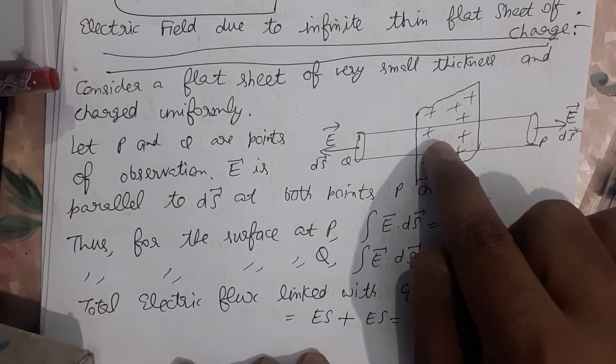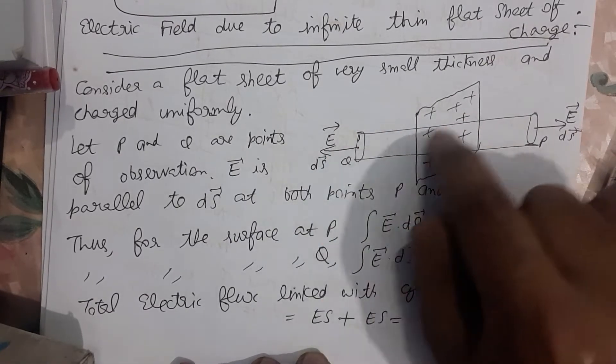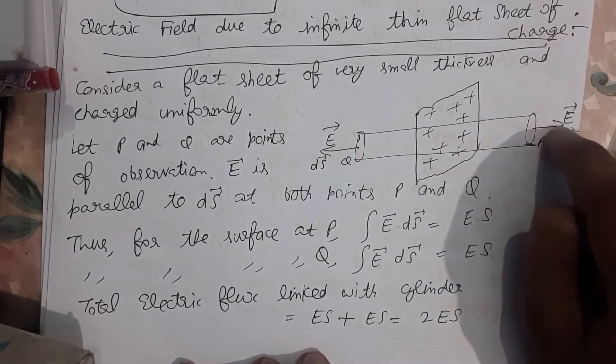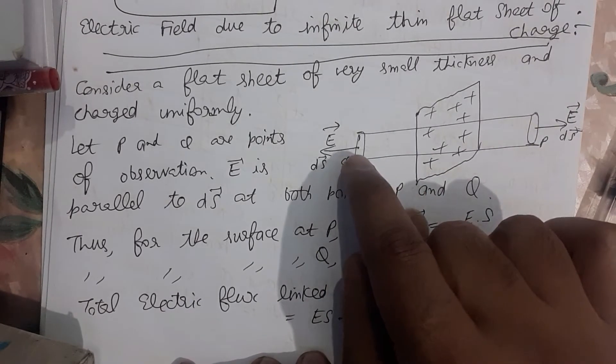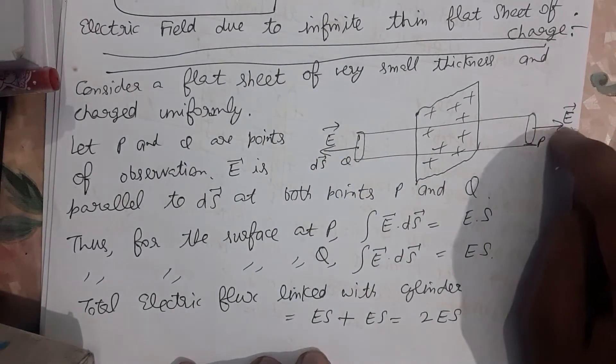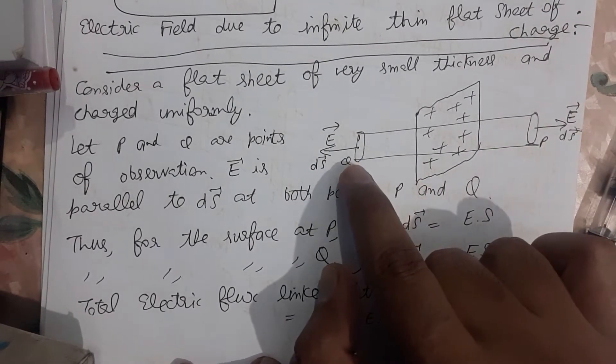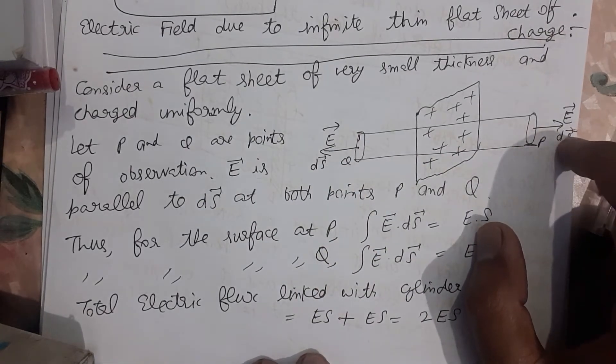E vector is always away from positive charge. Away from positive charge on both sides. Area vector is always perpendicular to the surface. So we have here two area vectors, ds vector and ds vector.